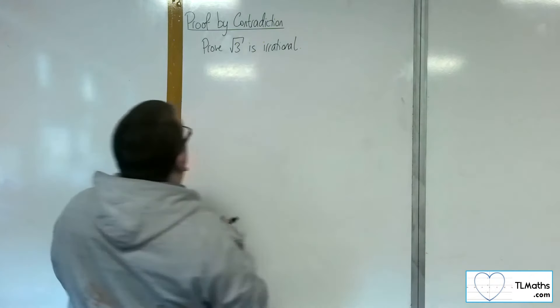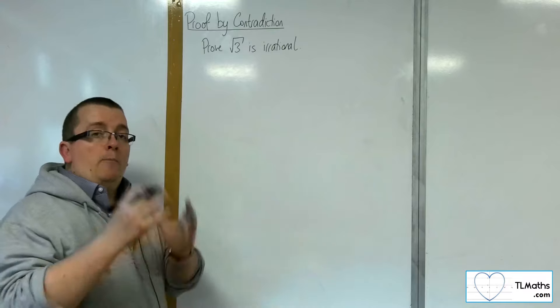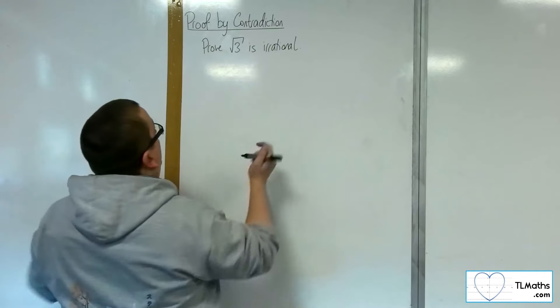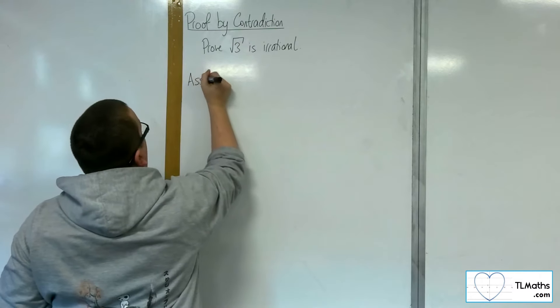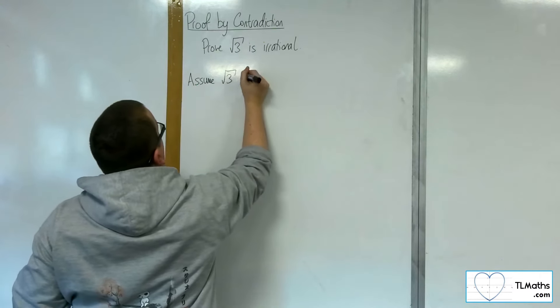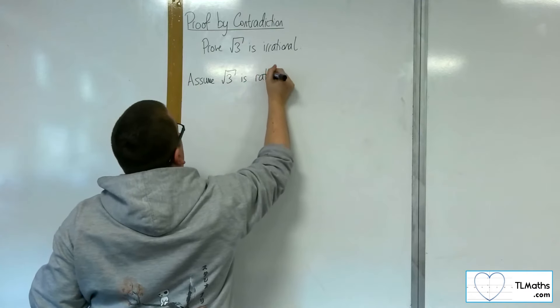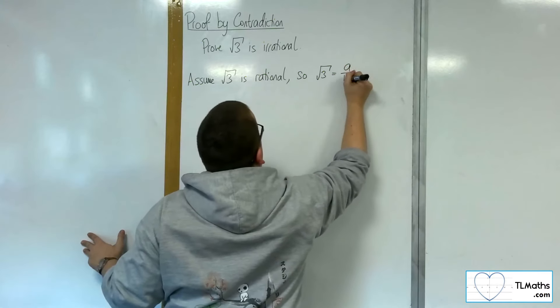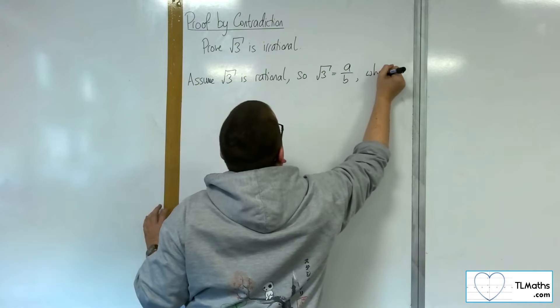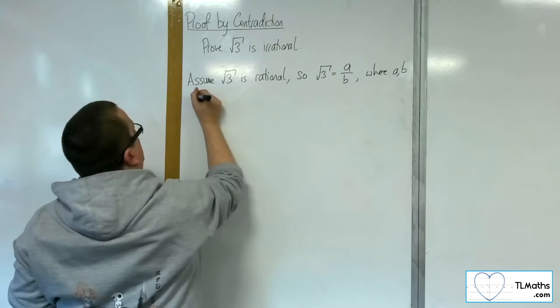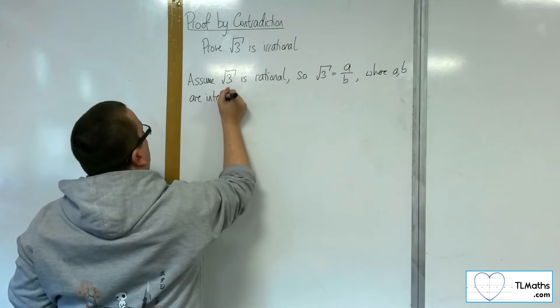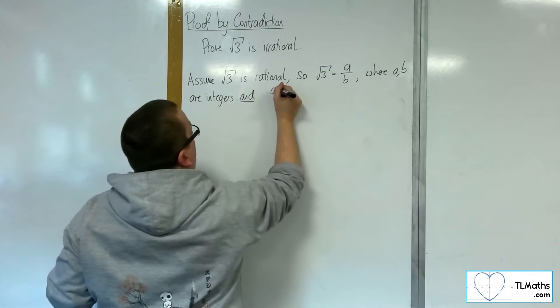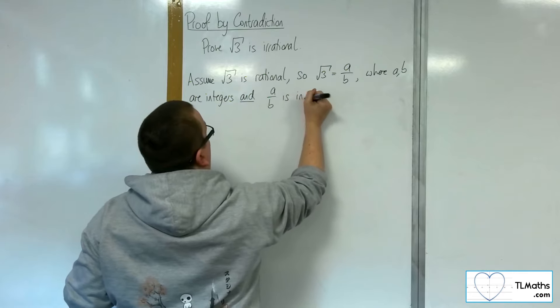So proving that root 3 is irrational, a proof by contradiction starts with the assumption that is the negation of that statement. So we're going to assume that root 3 is rational. So we can write root 3 as a over b, where a and b are integers, and the important fact that a over b is a fraction in its simplest form.